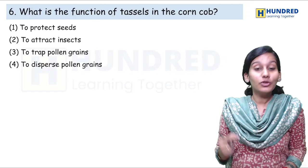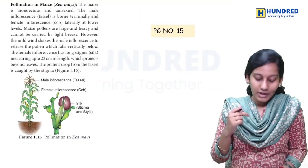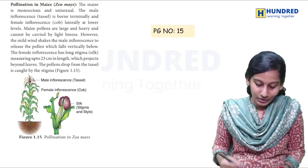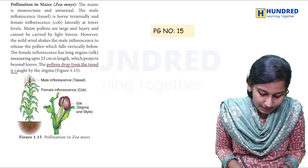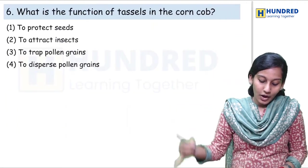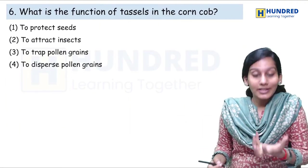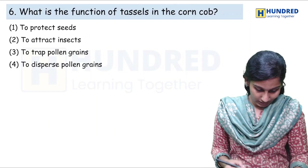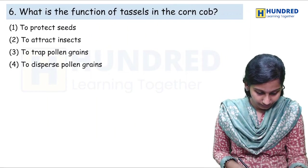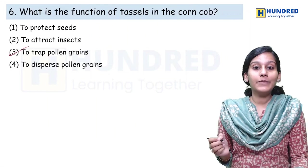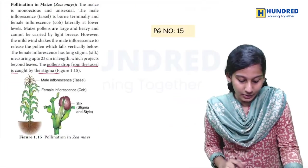What is the function of tassels on the corncob? So, pollination — maize pollination. What is the function? The pollens which drop from the tassel are caused by the stigma, to receive the pollen — that is, to trap the pollen grain. So which is the right answer? Option 3 — that is to trap the pollen grain.